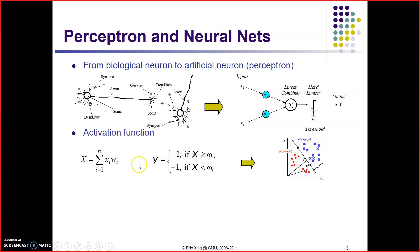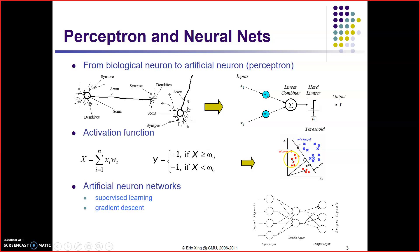Activation function — what is the activation function? x is equal to sigma, i running from 1 to n, xi into wi. The hard limiter is having one function known as the activation function, and that can have many mathematical functions, like sin theta, cos theta, or any step function. Artificial neural networks are basically the supervised learning problem networks — a supervised learning algorithm.